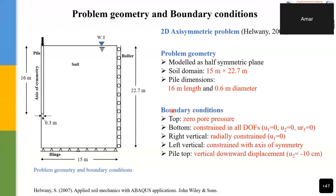Regarding boundary conditions: the water table is at the top, so a zero pore pressure boundary condition is specified there. The bottom is fully constrained in all degrees of freedom — two displacement components and one rotational component. The right vertical boundary is restrained radially (u1 = 0). The left vertical boundary is constrained with axisymmetric conditions for both pile and soil. At the pile top, a prescribed displacement of 10 cm downward is specified, entered as a negative value.